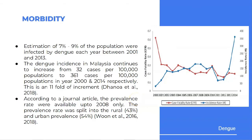Let us talk about the morbidity. An estimation of 7% to 9% of the population were infected by dengue each year between 2001 and 2013. The dengue incidence in Malaysia continues to increase from 32 cases per 100,000 population to 361 cases per 100,000 population in the year 2000 and 2014 respectively — an 11-fold increment. The graph on the right side obtained from CPG shows the case fatality rate and incidence rate from 2000 to 2014.